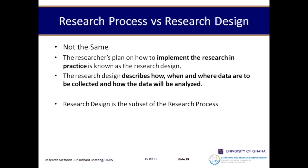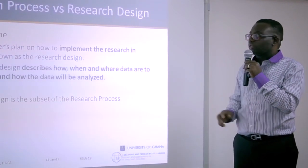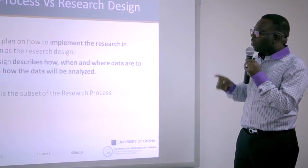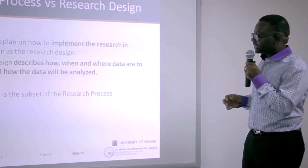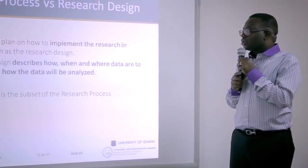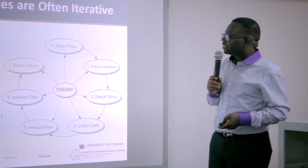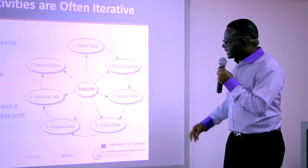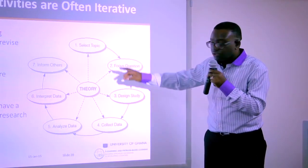There are four key phases. The research process is different from the research design, even though some people think they are synonymous — they are not. They are related. The research plan on how to implement the research in practice is known as the research design. The research design describes how, when, and where data will be collected and how the data will be analyzed. The design of the research is a subset of the research process.